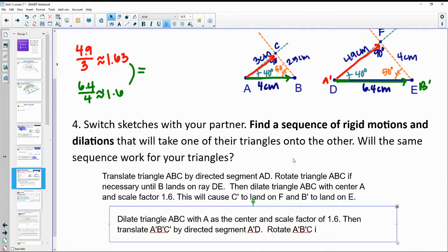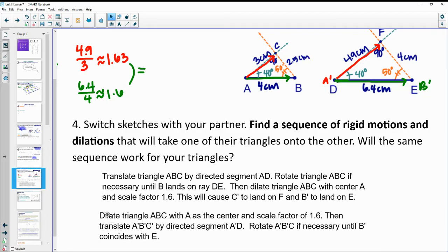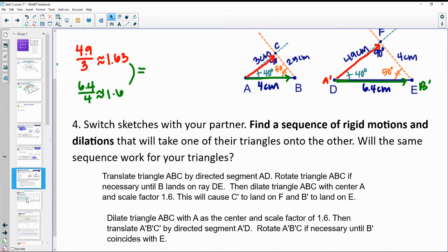Rotate A prime B prime C prime if necessary until, and now this time since our new dilated triangle is the same size, now we could just rotate it until B prime coincides with E. Or you could have picked C prime coincides with F. So those are kind of two different options for transformations there.